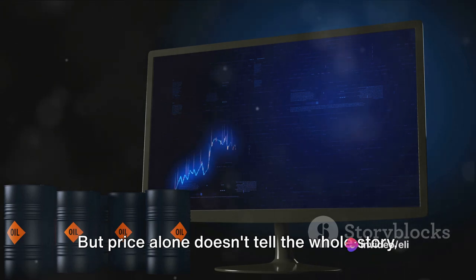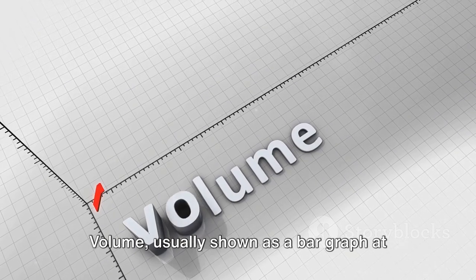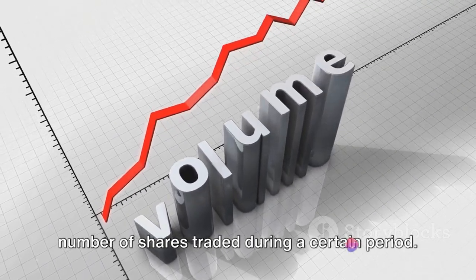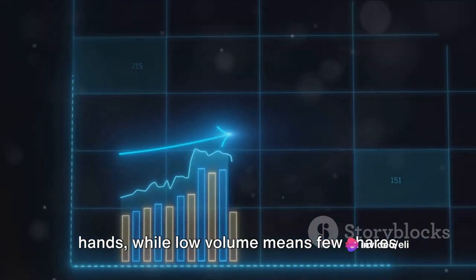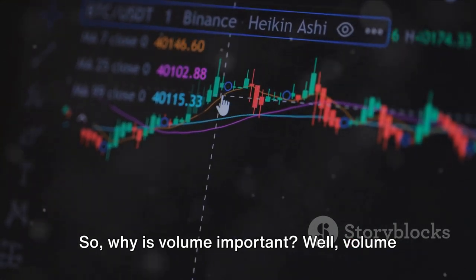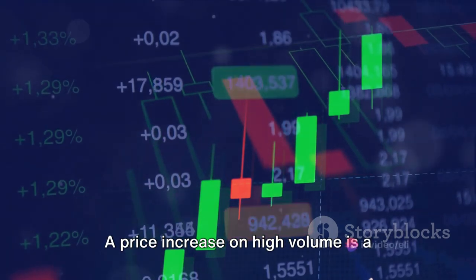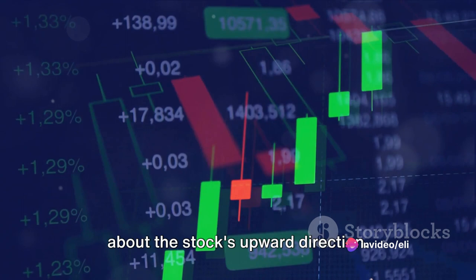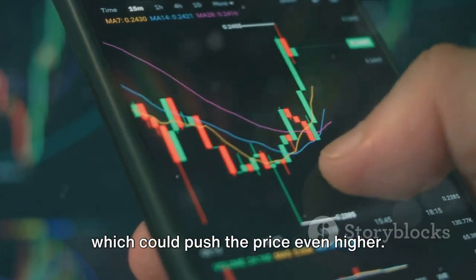But price alone doesn't tell the whole story. That's where volume comes in. Volume, usually shown as a bar graph at the bottom of the chart, represents the number of shares traded during a certain period. High volume means a lot of shares changed hands, while low volume means few shares were traded. Volume gives us an insight into the strength of price movements. A price increase on high volume is a strong signal that the market is confident about the stock's upward direction. It means a lot of investors are buying, which could push the price even higher.